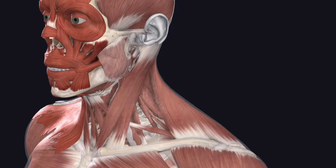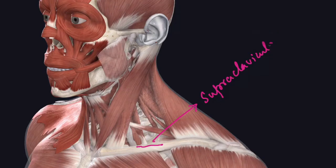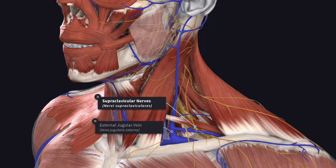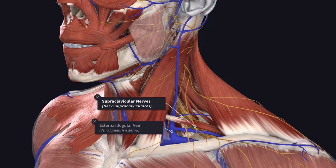At the middle one-third of the clavicle, the investing layer of deep cervical fascia again splits into superficial and deep layers attaching to the anterior and posterior borders of the upper surface of the clavicle, enclosing the supraclavicular space. The posterior layer extends above to form a fascial sling around the inferior belly of the omohyoid, known as the omohyoid fascia. The contents of the supraclavicular space are the terminal part of the external jugular vein and the supraclavicular nerves before they become cutaneous.